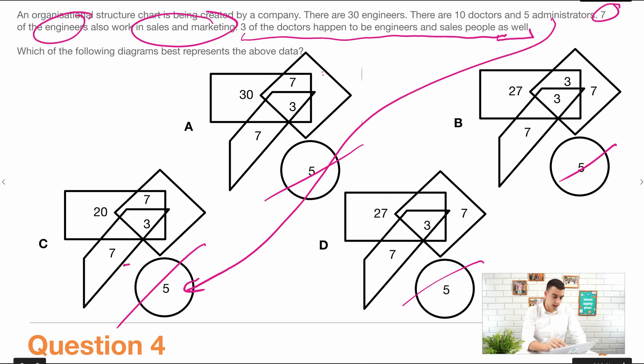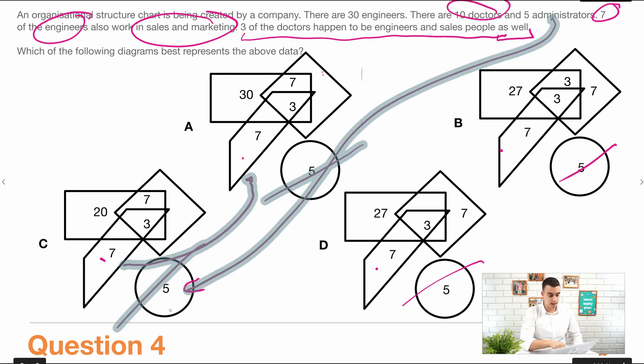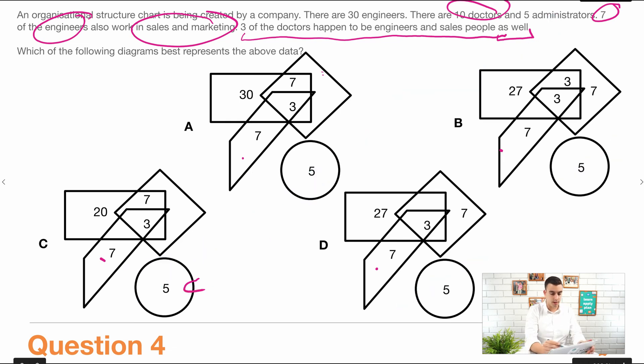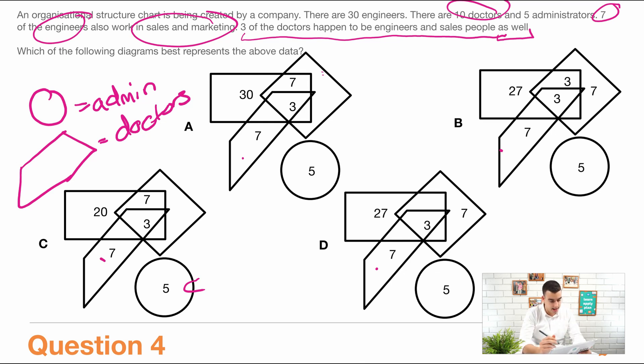Now, we'll also notice that the trapezium always adds up to 10. This trapezium here, here, here, and here always adds up to 10. So we know there are 10 doctors. So we know that probably, if we were labeling the different images, we've got admin, then we've got doctors, engineers, and then what are the two things left? We've got sales and marketing, and engineers.